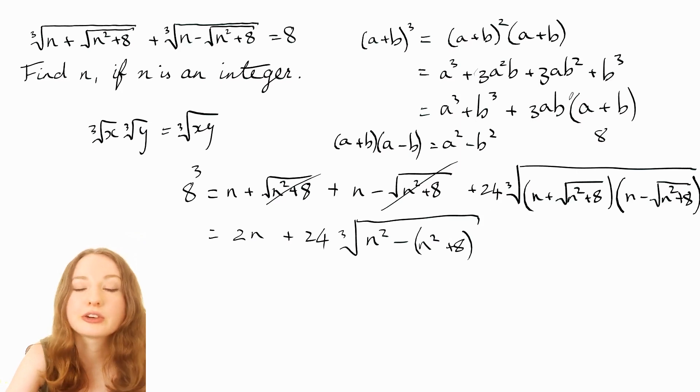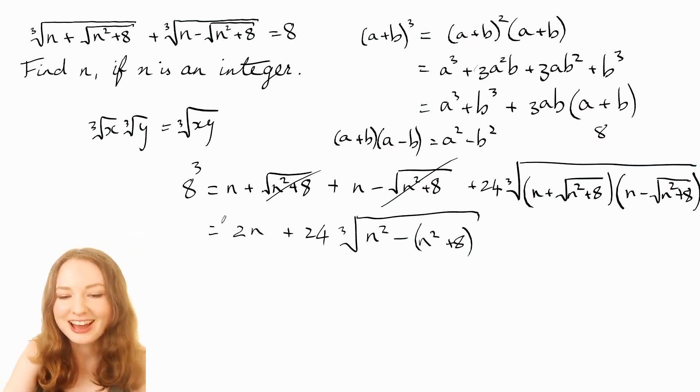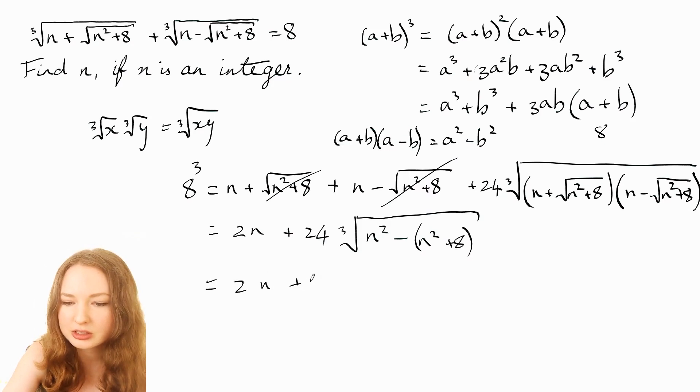So turns out that that factorization did actually make it much simpler. Now with this bit we can simplify that as well because the n² are going to cancel. So we've got cube root of just -8.